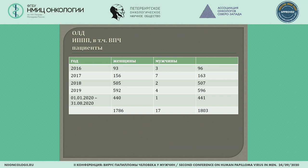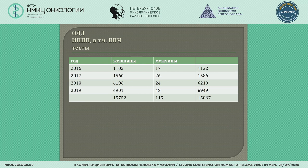Of them, only 17 men were examined. The laboratory has three types of commercial test systems for HPV diagnostics: a qualitative test covering 12 types, and a quantitative test where we estimate the concentration.